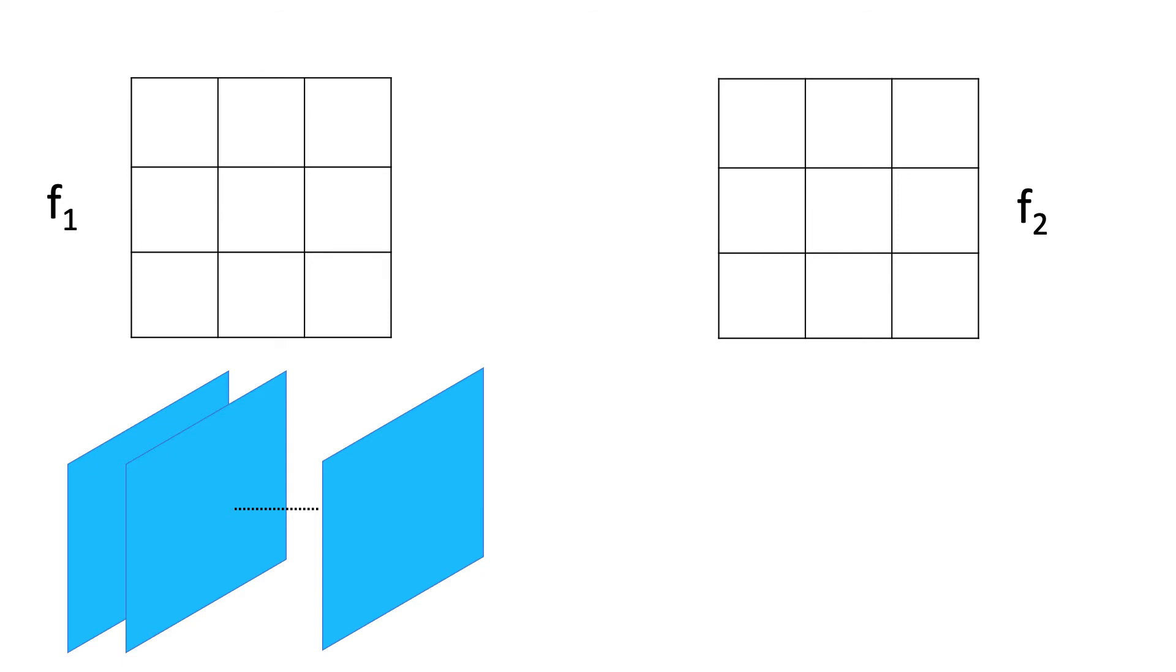The size of this feature map is total pixel by height by width and is passed to the next layers for motion prediction.